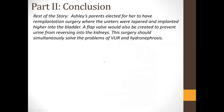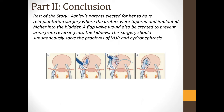To complete the story, Ashley's parents elected for her to have re-implantation surgery, where the ureters were tapered and implanted higher into the bladder. A flap valve would also be created to prevent urine from reversing into the kidneys. This surgery should simultaneously solve the problems of VUR and hydronephrosis by moving the ureter higher on the bladder wall, making it less likely for urine collecting in the bladder to flow backward into the ureter.